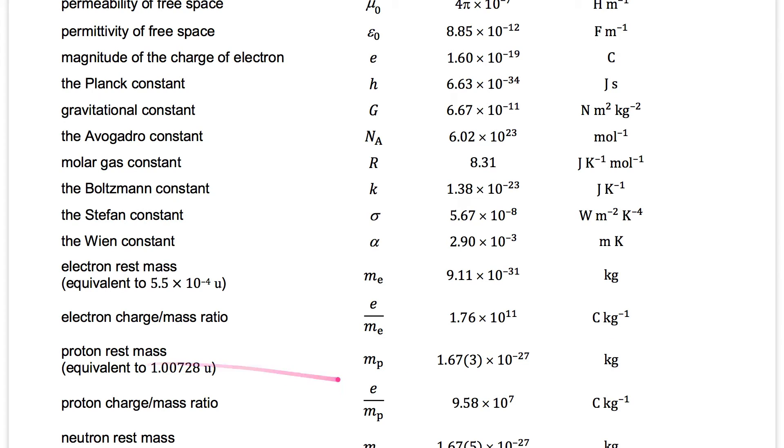The proton rest mass is 1.67 times 10 to power minus 27. But for the electron, it's to the power minus 31. This one is minus 27 kilograms. So this is a little bit heavier than the electron.